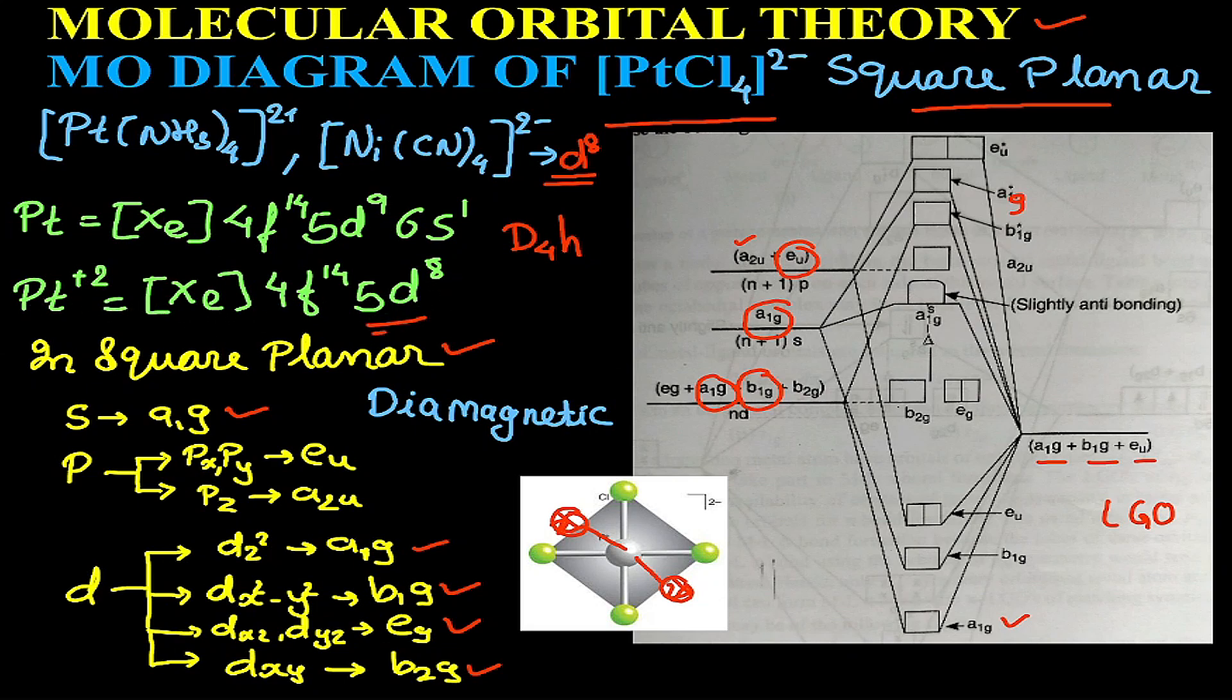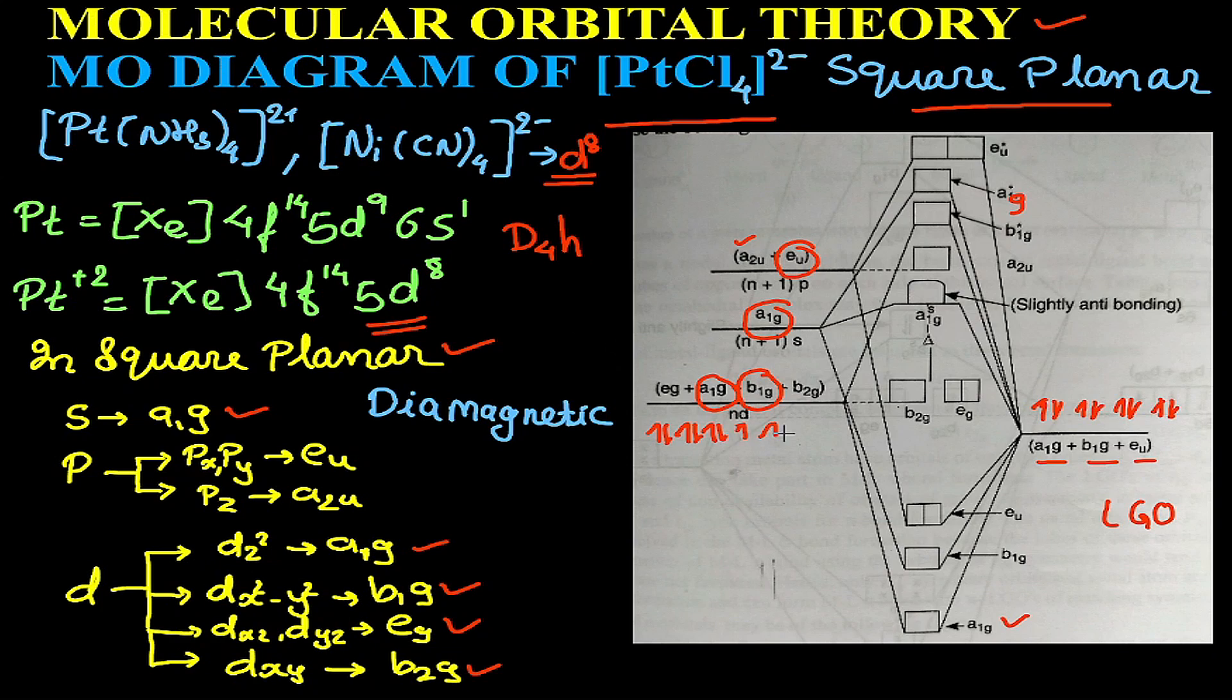So basically it is a d8 system. There are eight electrons in metal orbitals, and eight electrons will be brought by four chlorine atoms, so we'll have eight electrons of the ligand, that is chlorine, and we have eight electrons of the metal, that is platinum.